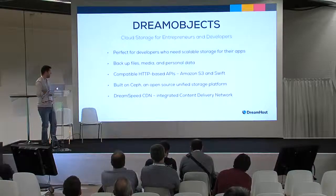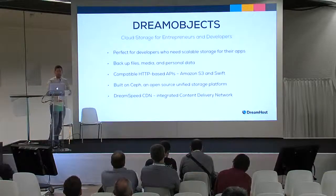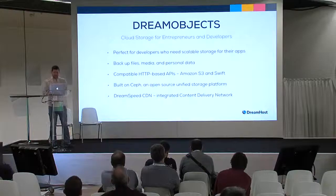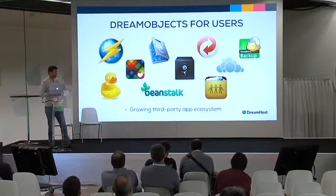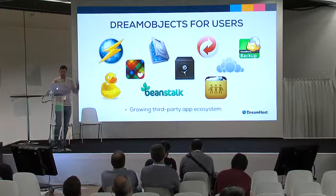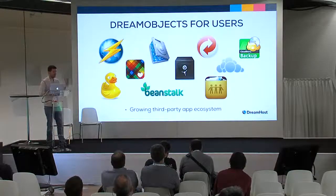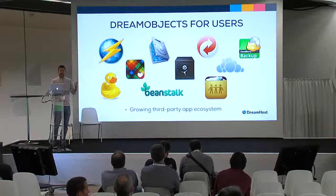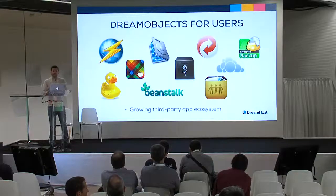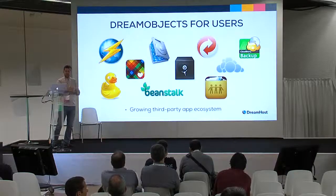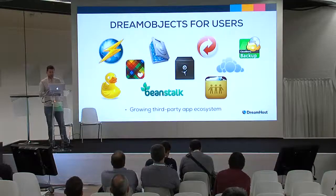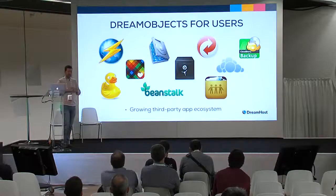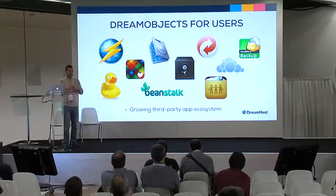We even have a content delivery network from Fastly integrated that we call DreamSpeed CDN. It's taken off pretty well, with lots of applications for users who don't necessarily want to use the APIs. A couple of years back we created a company called Ink Tank, which we spun out of DreamHost to incubate and continue to develop and provide services on top of Ceph, the open source project. That went spectacularly well for everyone involved.